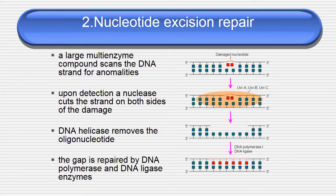Coming to nucleotide excision repair: a large multi-enzyme complex scans the DNA strands for anomalies. Upon detection it cuts the strand on both sides of the damage. The damaged portions on both sides are identified; DNA helicase removes the oligonucleotides at both adjacent regions. The gap is then repaired by DNA polymerase and DNA ligase enzyme, as shown in the figure.